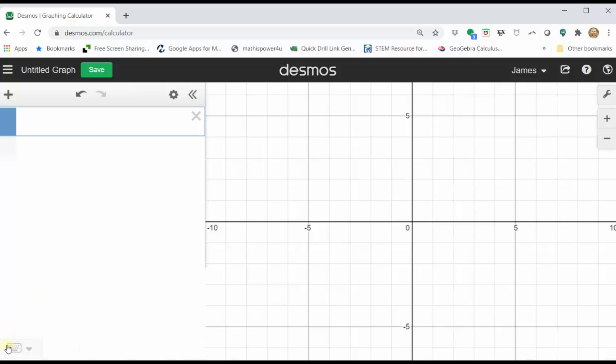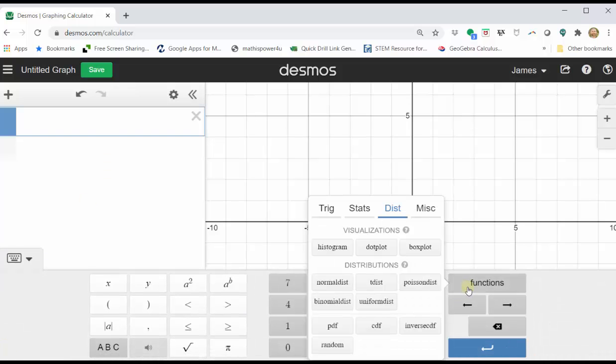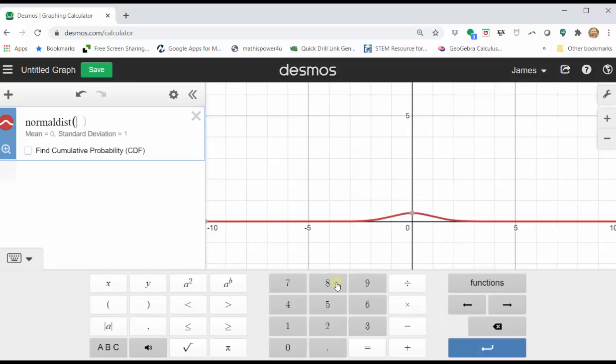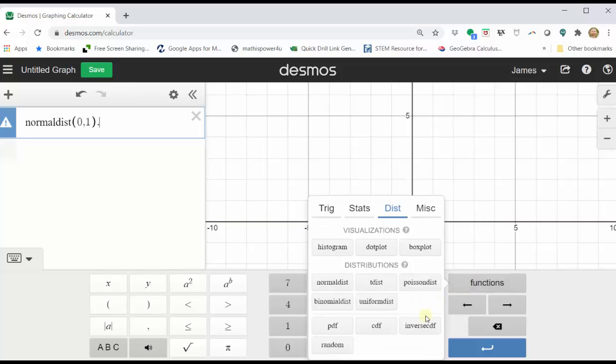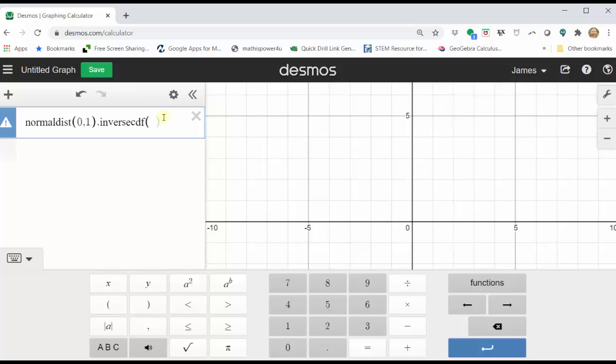To do this, click Show Keypad. Click Functions. Under the Distributions menu, click Normal Dist for Normal Distribution. For the Standard Normal Distribution, we enter a mean of zero comma, a standard deviation of one, close parenthesis, period or decimal point. Click Functions, click Inverse CDF, then enter the area to the left of the z-score, which again is 0.975. We can see the z-score is approximately 1.96.